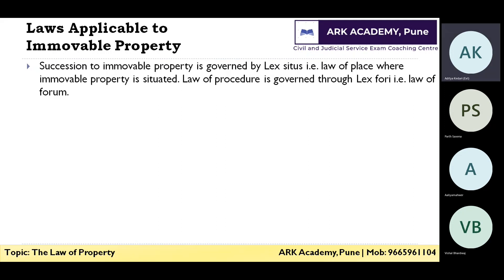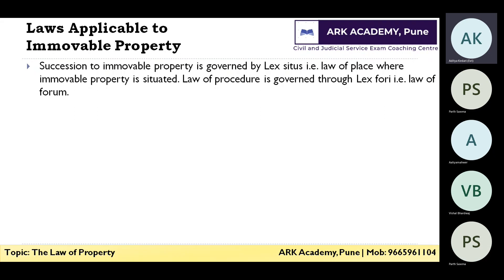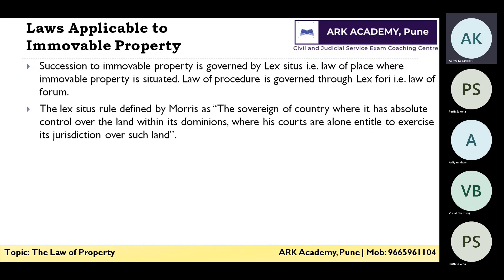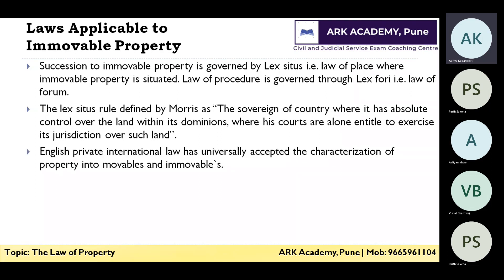So if the immovable property is in Germany, German law applies. If the property is in India, Indian law applies, even though its owner is a foreigner. Whether the property is in Canada, Japan, or Australia, the law of the country where the immovable property is situated will govern it. The lex situs rule is defined by Maurice as: the sovereign of the country has absolute control over the land within its dominions, and its courts alone are entitled to exercise jurisdiction over such land. Only the lex situs rule applies — no German or Japanese law can apply to property situated in India.